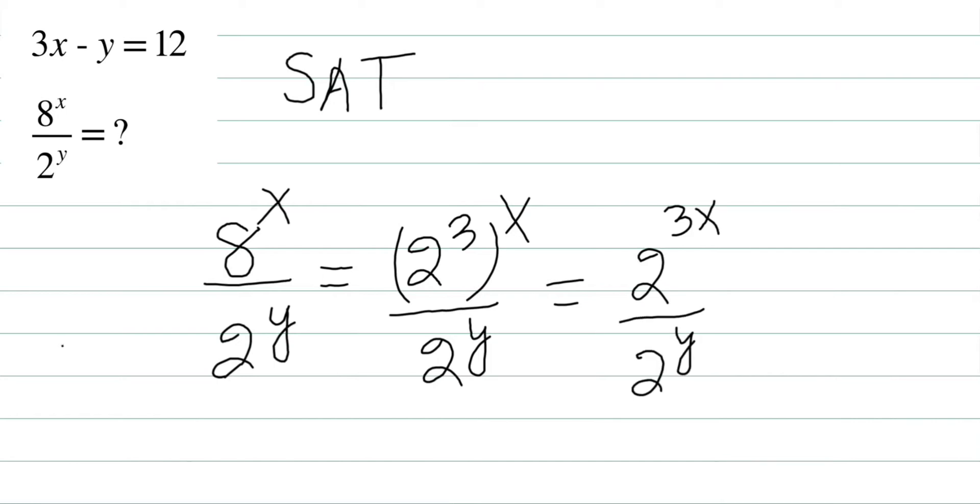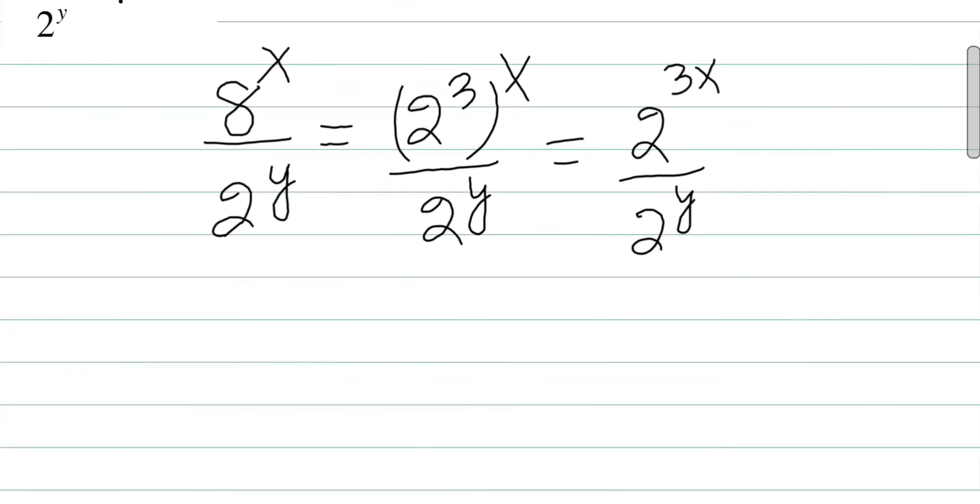Now this is nothing but the difference of their powers. Using the exponential rule, we can write this as 2 to the power 3x minus y. You know that the value of 3x minus y is 12, which is given.